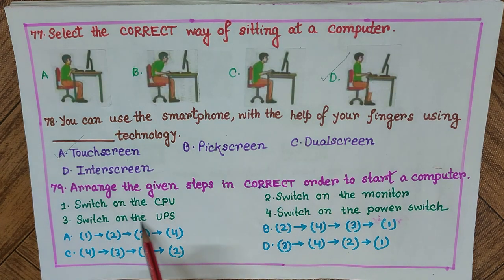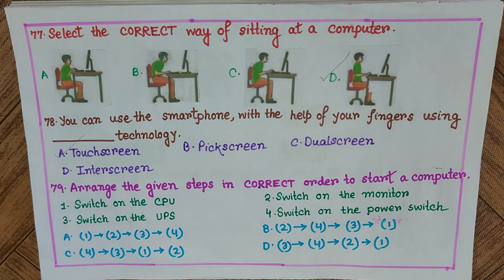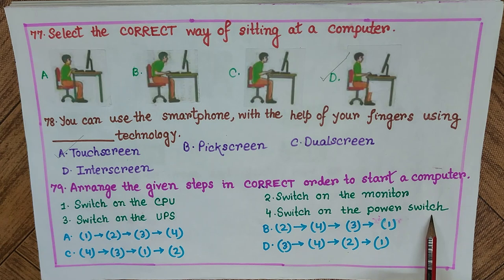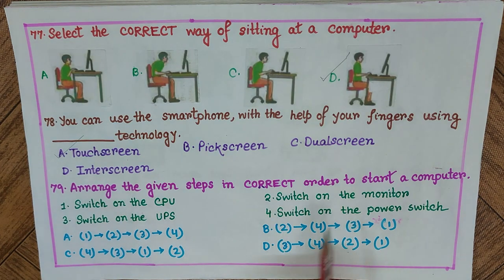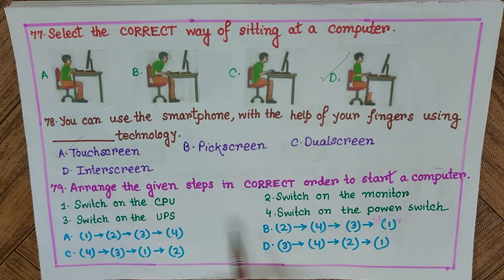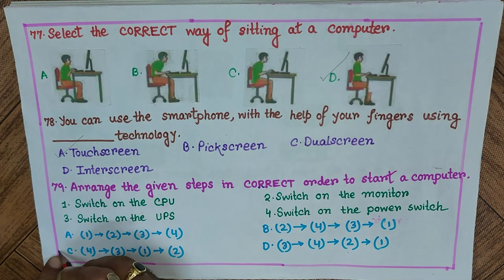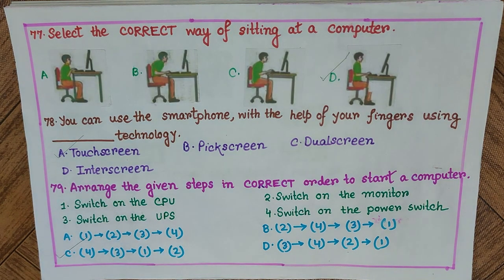Question 79: Arrange the given steps in correct order to start a computer. 1) switch on the CPU, 2) switch on the monitor, 3) switch on the UPS, 4) switch on the power switch. The correct order is: power switch first, then UPS, then CPU, then monitor — that is 4, 3, 1, 2. The answer is C.